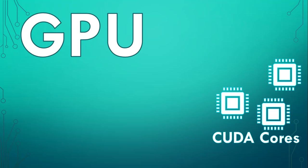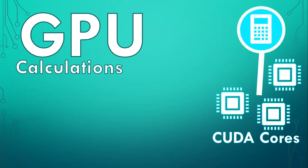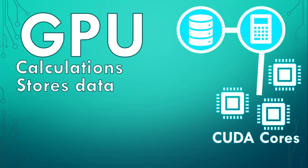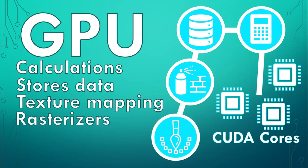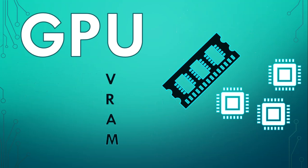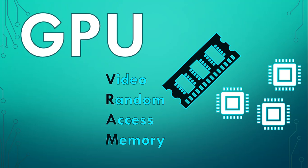The GPU cores perform the calculations, the memory stores the data, texture units handle texture mapping, and the rasters convert the data into pixels for display. VRAM, or video random access memory, is the dedicated workspace where the GPU stores graphical data, textures, and frame buffers — it's the GPU's very own countertop or memory. It's often a different technology compared to normal computer RAM because it needs to be read rapidly to draw the image.